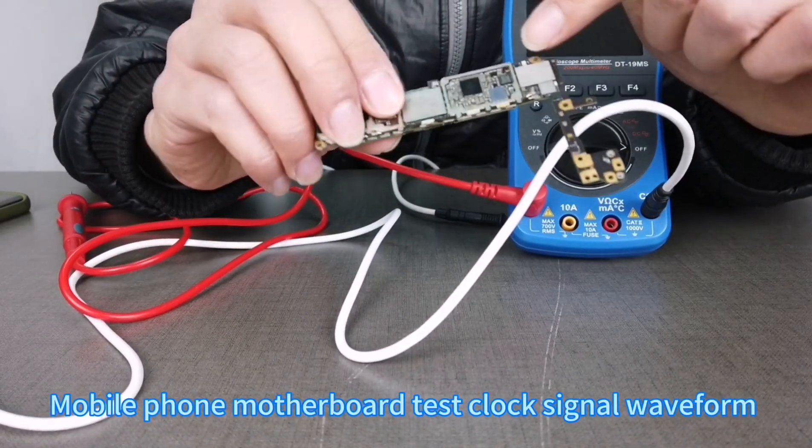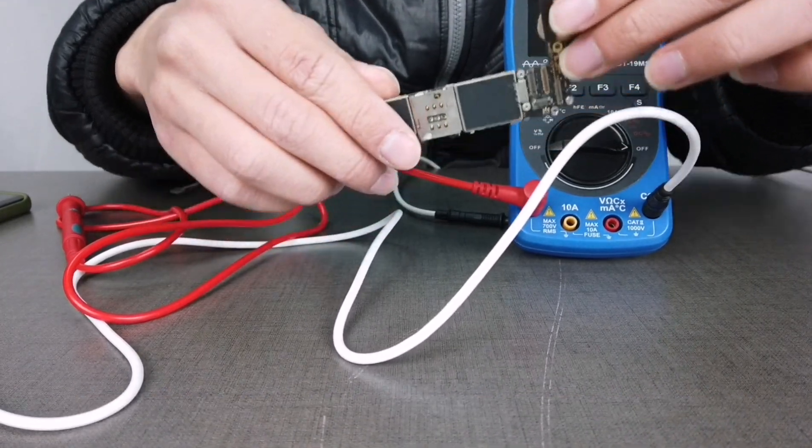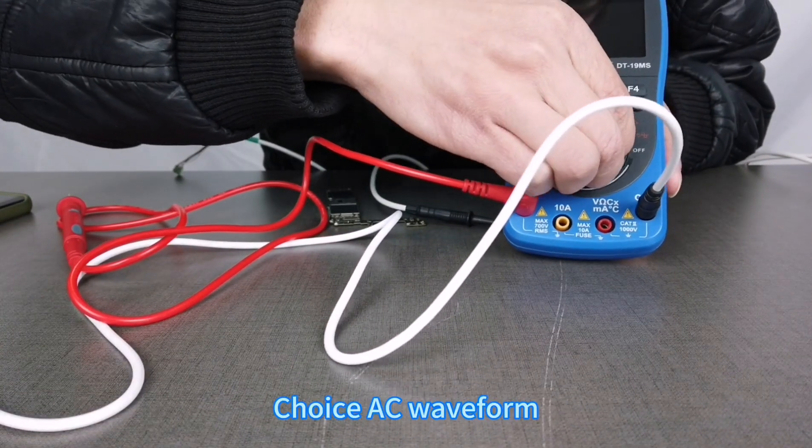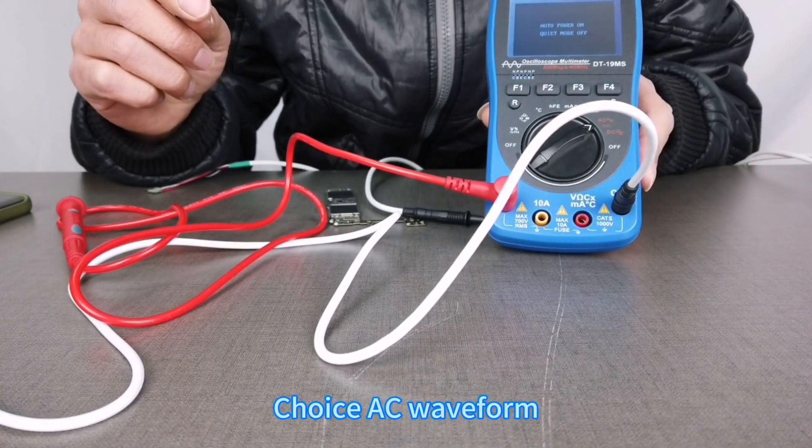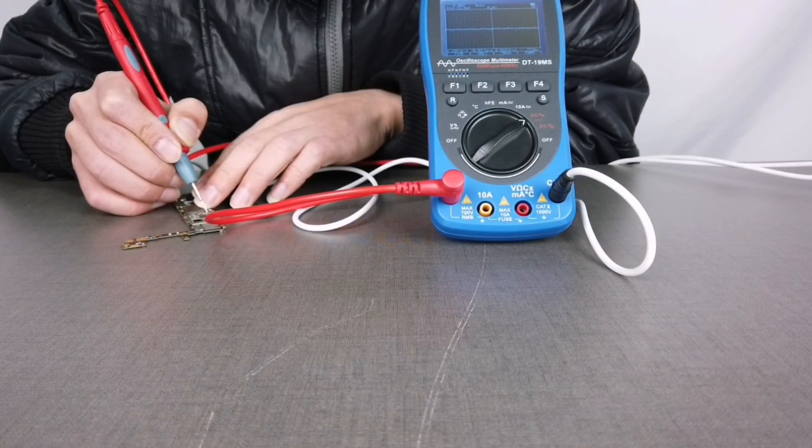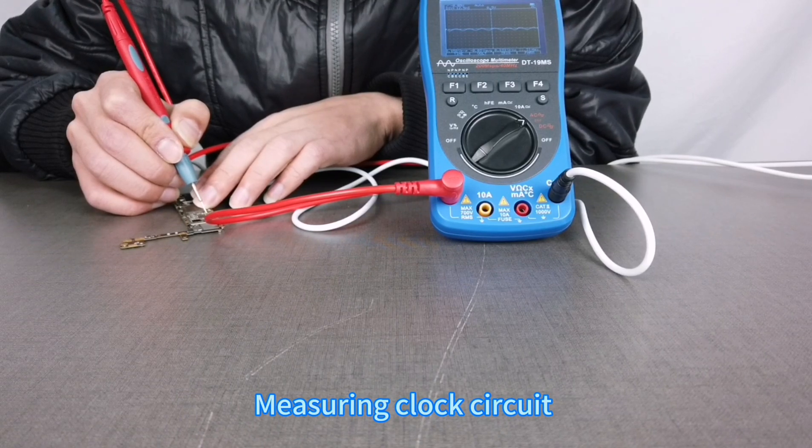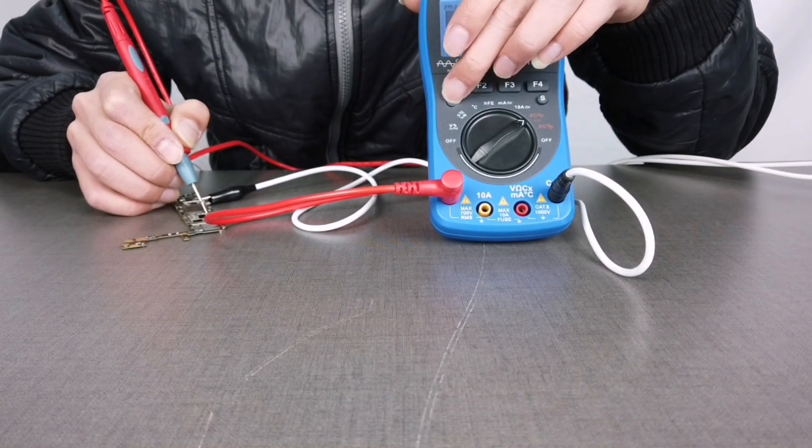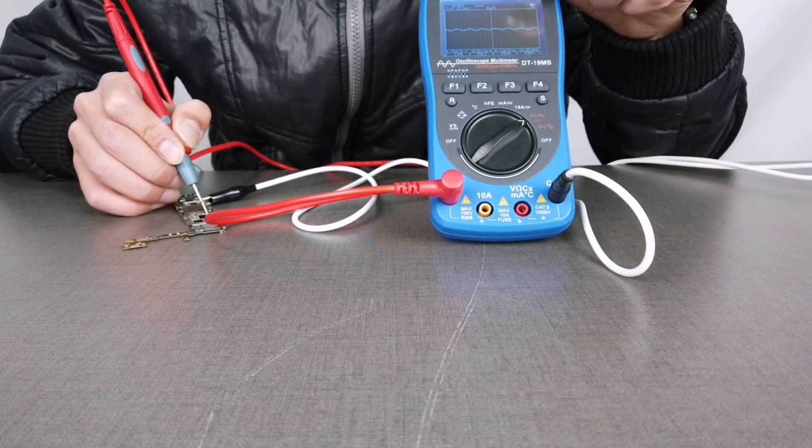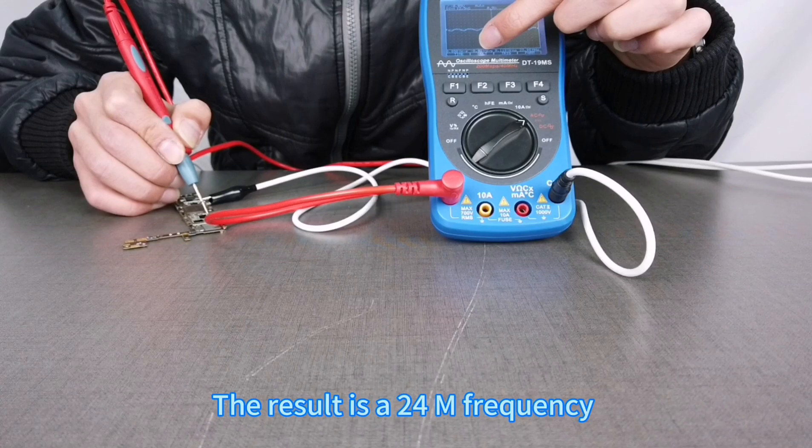Testing a mobile phone motherboard clock signal waveform. Select AC waveform mode for measuring the clock circuit. Click on automatic range and the result shows a 24 MHz frequency.